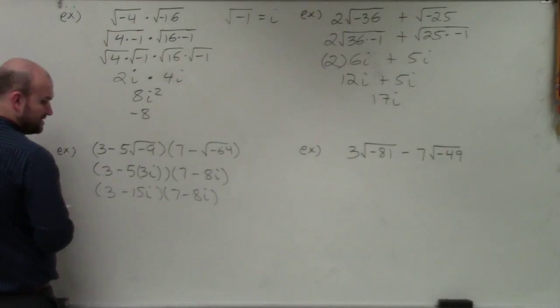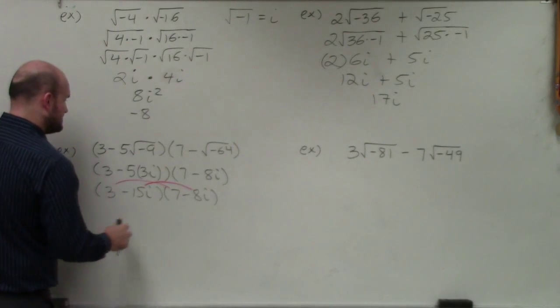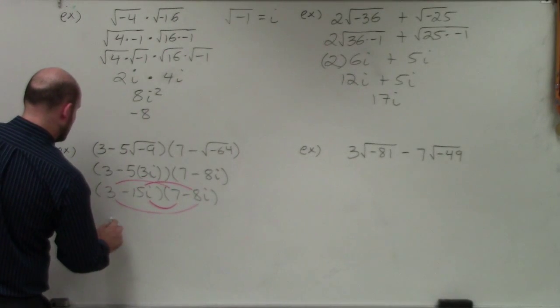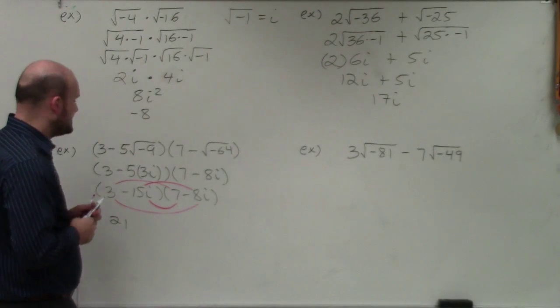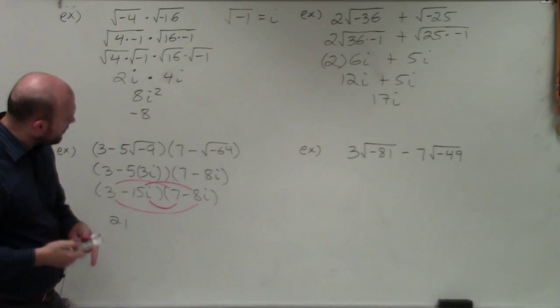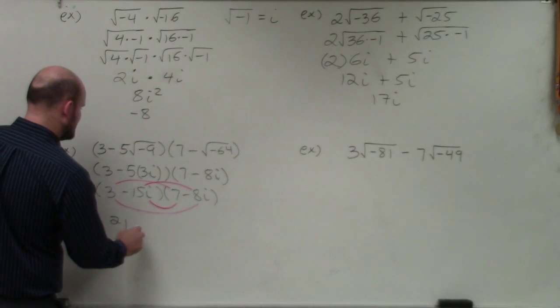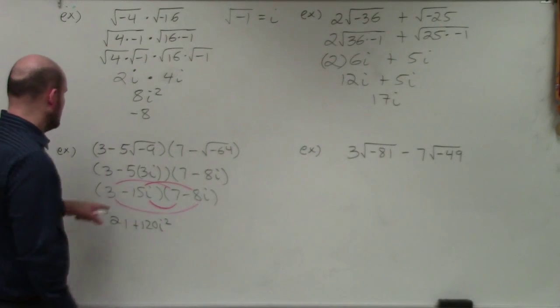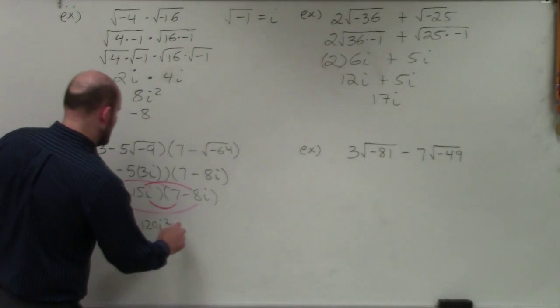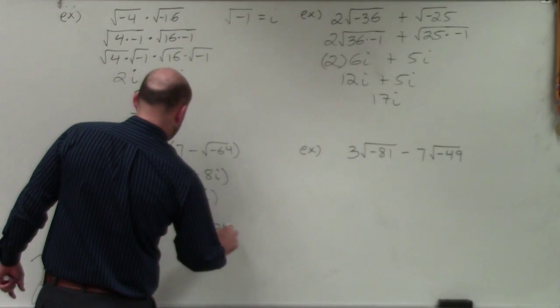Now I need to apply FOIL to finish the problem. 3 times 7 is 21. Negative 15i times negative 8i: 15 times 8 is 120, negative times negative is positive, and we have i squared, so that's positive 120i squared. Then for the inner term, 7 times 15 is 105, so that's negative 105i. And 3 times negative 8i is negative 24i.